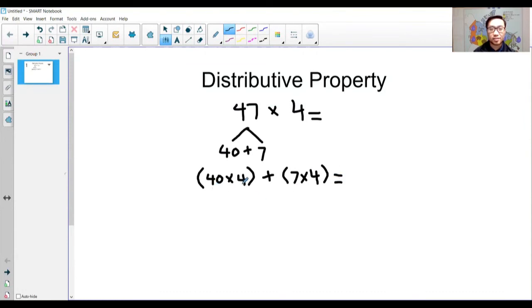For 40 times 4, I'm thinking that 4 times 4 is equal to 16. And then, I can add a 0 at the end. So, 40 times 4 is equal to 160. 7 times 4, I know is equal to 28.